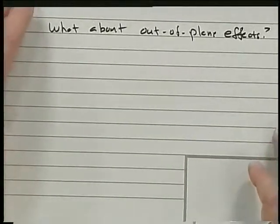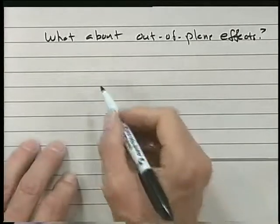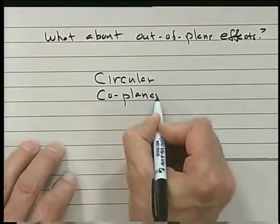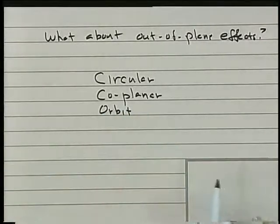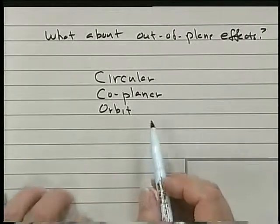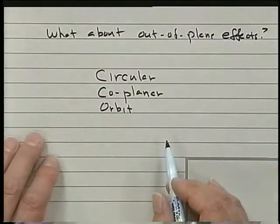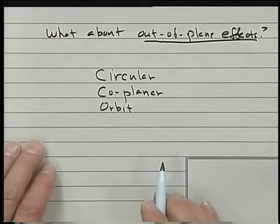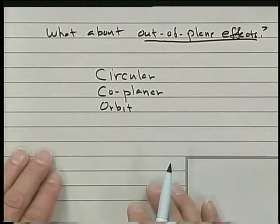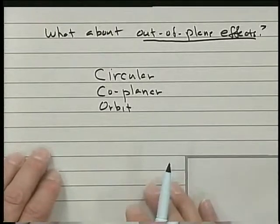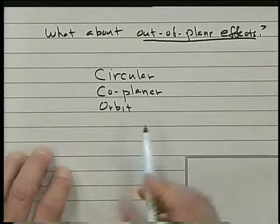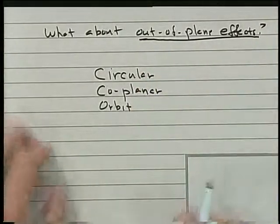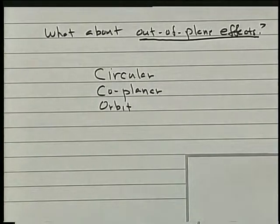Another question was: what about out-of-plane effects? We talked about how in the Hohmann transfer you are looking at a circular coplanar orbit — this is the basic assumption. If you have a case where the orbit has changed in inclination, then you have to consider out-of-plane effects as another part of the problem. In some cases, you can make simplifying assumptions to compute out-of-plane effects and add them onto the circular coplanar transfer. This is not an easy question to answer in general — it really depends on the specific problem you are trying to apply the Hohmann transfer to.